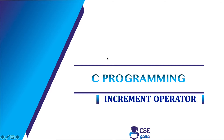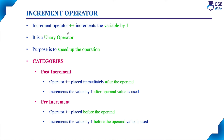Welcome to CSI Guru. In this session, we will discuss the increment operator. The increment operator is represented by the symbol double plus and it increments the value of the variable by one. For example, if you are considering a plus plus, the actual value of a will get incremented by one. This is the purpose of the increment operator, and the increment operator is a unary operator.